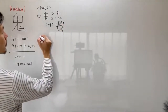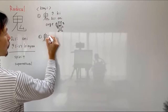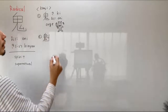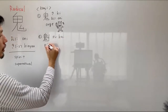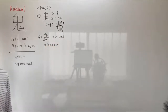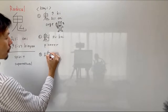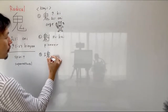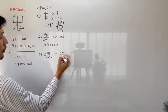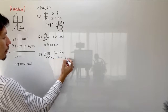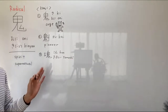And number 2. The meaning of this Kanji is KAI. It means pioneer. Number 3 — the readings of this Kanji are KON and TAMASHI. It means soul and spirit.